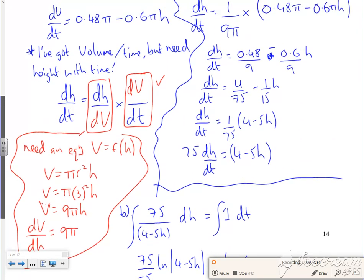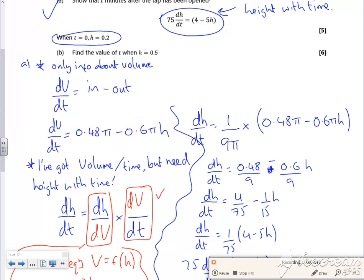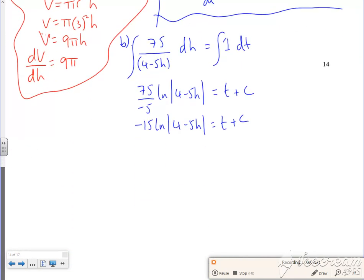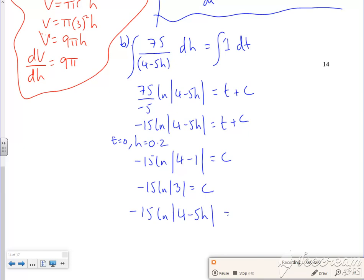Now I'm told in the question, all the way up here somewhere, T is 0, H is 0.2. So when T is 0 and H is 0.2, I get minus 15 log of 4 minus 5 times a fifth is 1, and that's equal to C. So it's minus 15 log of 3 is C there.